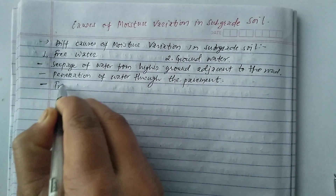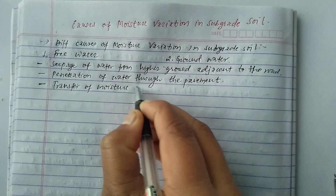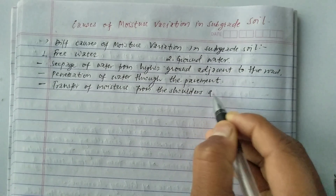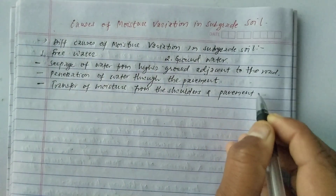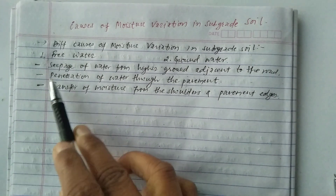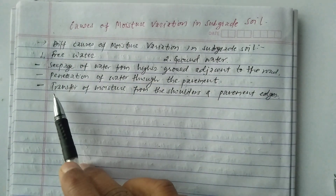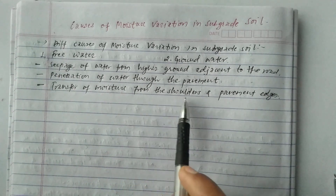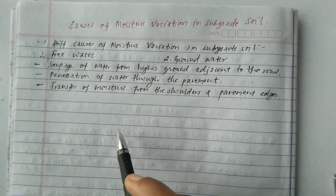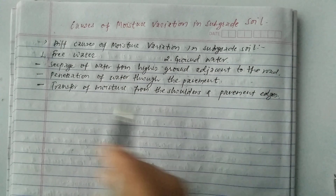The third cause under free water is the transfer of moisture from the shoulders and pavement edges. Whenever water transfers from the shoulders and pavement edges, it causes moisture variation in the subgrade soil.